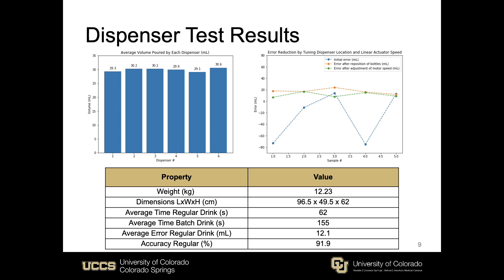At that point we were feeling a bit defeated, but our project manager Ray found online that other people had also been having problems with the reservoirs of those dispensers refilling consistently. Ray found that if you tilt the bottles to either side a certain number of degrees, it would cause the reservoirs to fill much more consistently. We made this change before our second stage of testing, and the second stage was way more successful.